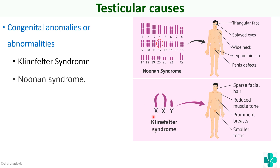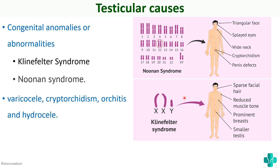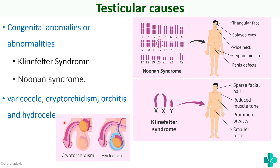In Klinefelter syndrome, the genotype is XXY, and features include sparse facial hair, reduced muscle tone, prominent breasts, as well as small testes. These are the two important congenital anomalies in which the testis itself is affected. Acquired conditions such as varicocele, cryptorchidism, orchitis, and hydrocele also affect the testis, impairing proper sperm production. Cryptorchidism involves failure of the testis to descend into the scrotal sac, and hydrocele involves accumulation of fluid inside the sac.